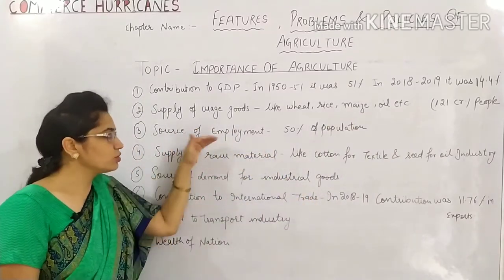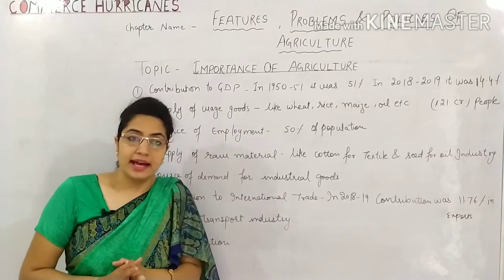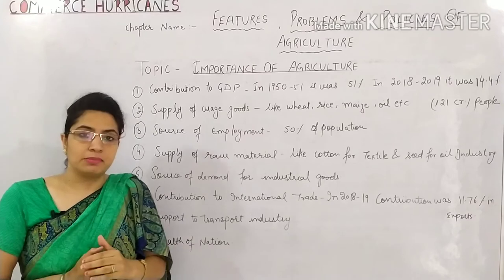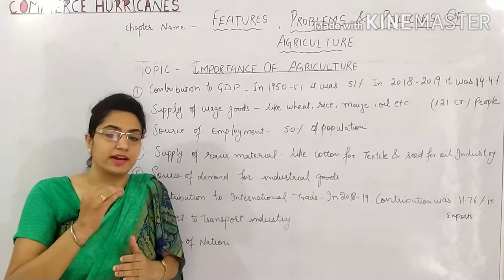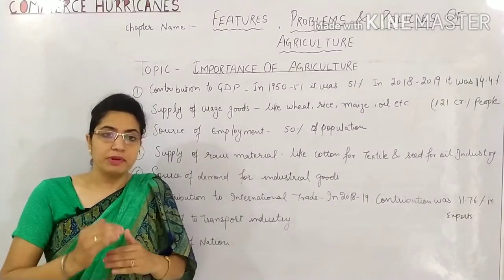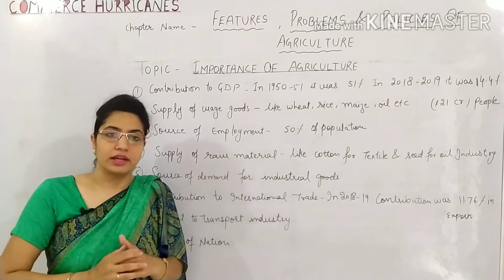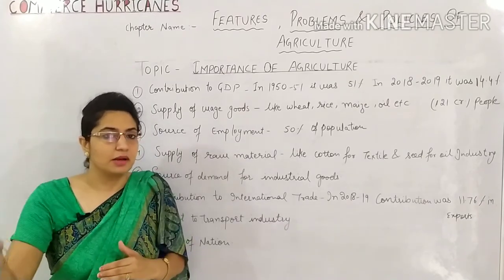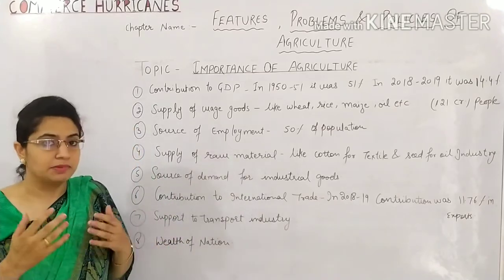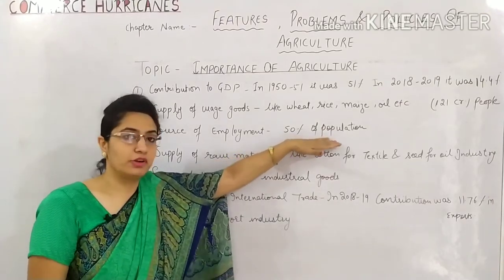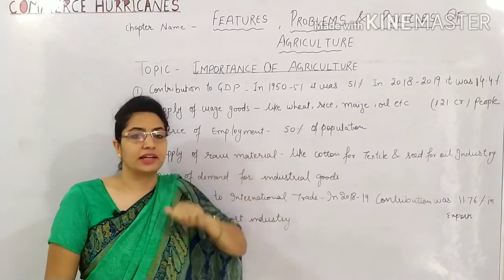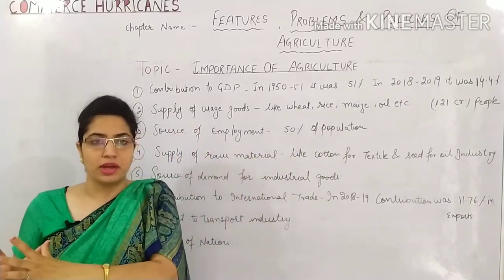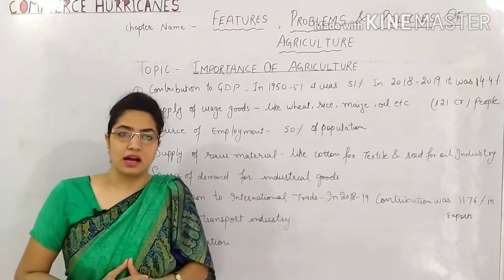Point number three is Source of Employment. Agriculture is a very big source of employment because today a lot of people depend on agriculture. They go to the field, they grow crops, they take produce to the market, and they earn money. Even today, 50% of the population is engaged in agriculture.